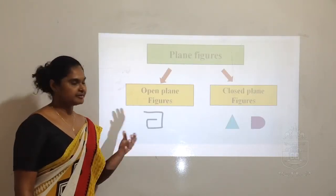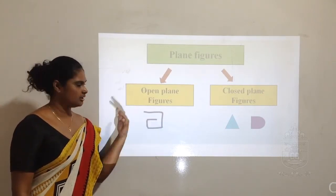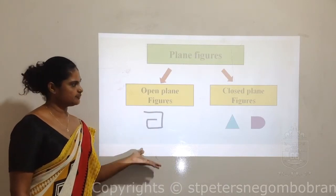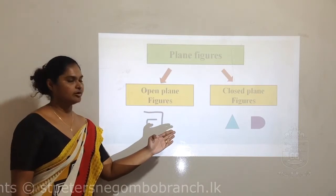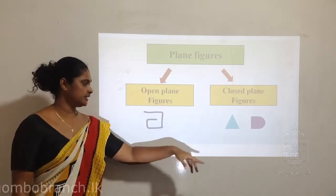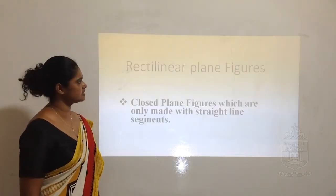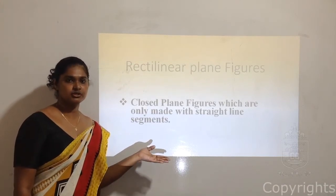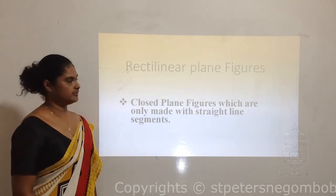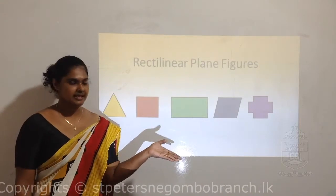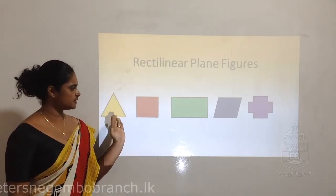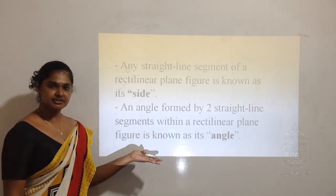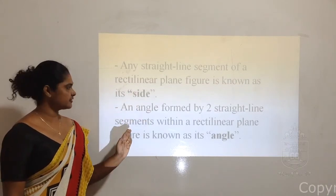We learned that plane figures are further classified into open plane figures and closed plane figures. Open plane figures are not properly enveloped or closed. Closed plane figures are nicely closed - the starting point and the ending point are the same. Then we learned that rectilinear plane figures are closed plane figures made with only straight line segments. All these shapes are rectilinear plane figures because they are made with straight line segments only.